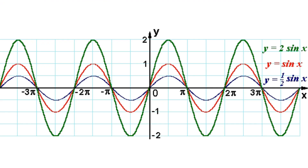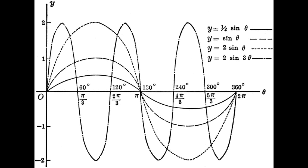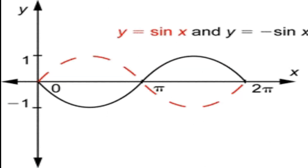In these three graphs, the period of all functions is the same but their amplitudes are different — 2, 1, and 1/2. Now see another figure in which four different sine graphs are drawn on the same axes. If you take 3θ instead of θ, the period becomes one-third of 2π. Also note that the graph of sin x and −sin x have the same period, but the graph of −sin x is the reflection of sin x with respect to the x-axis.